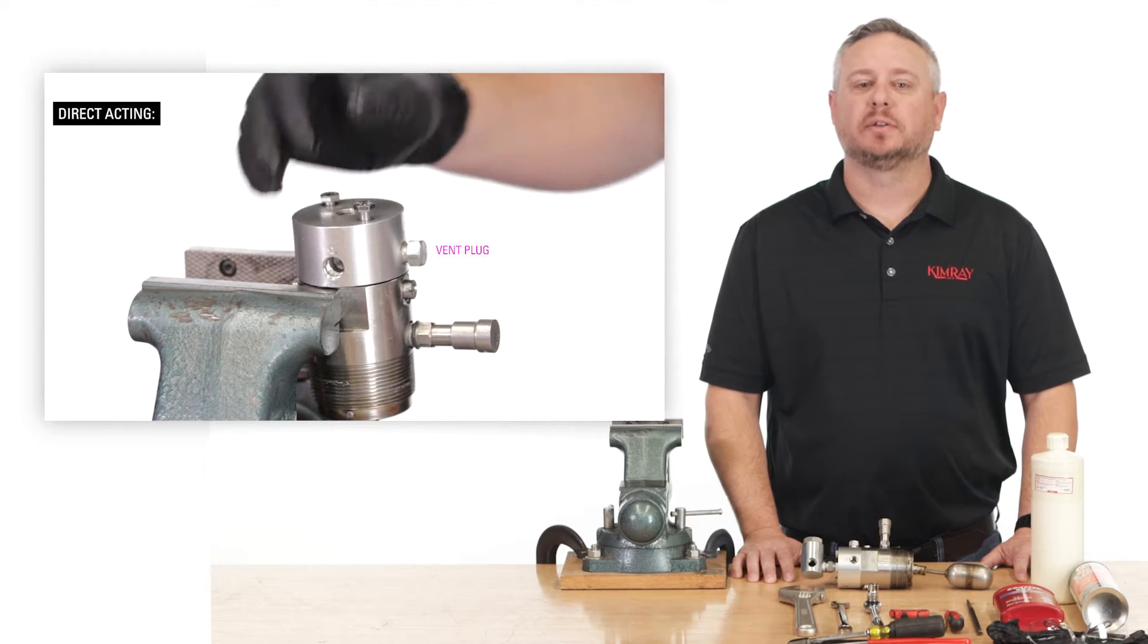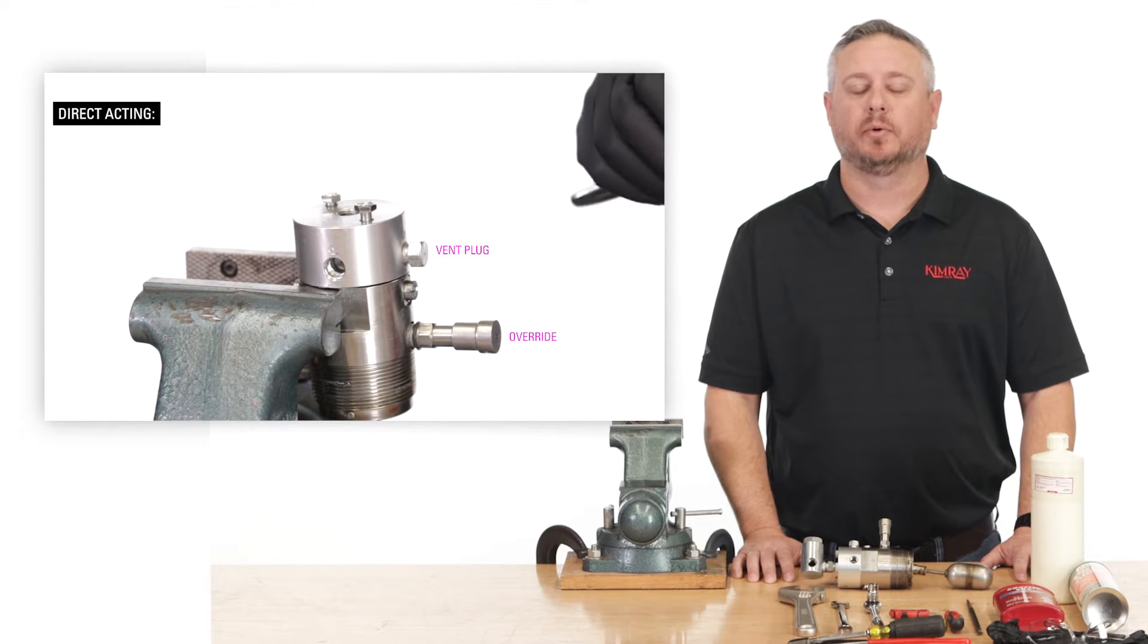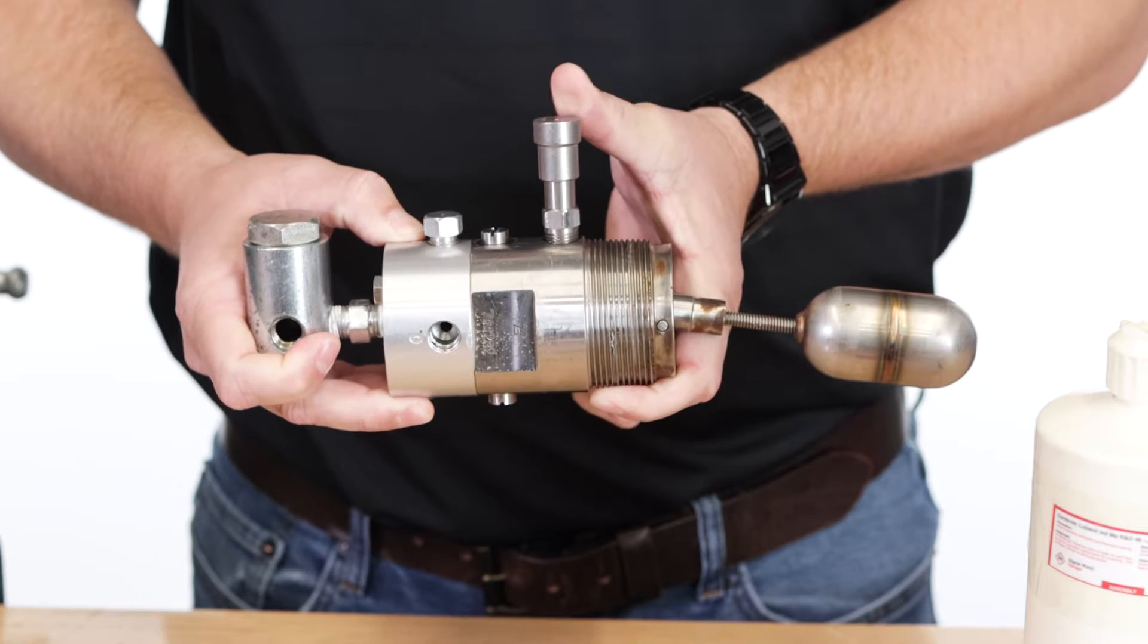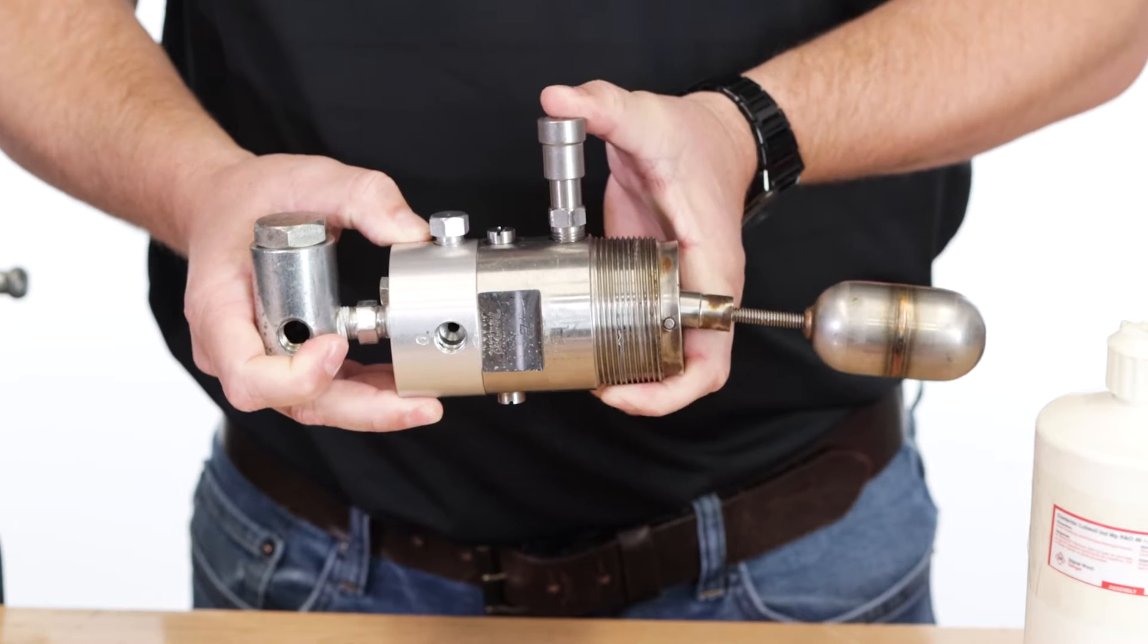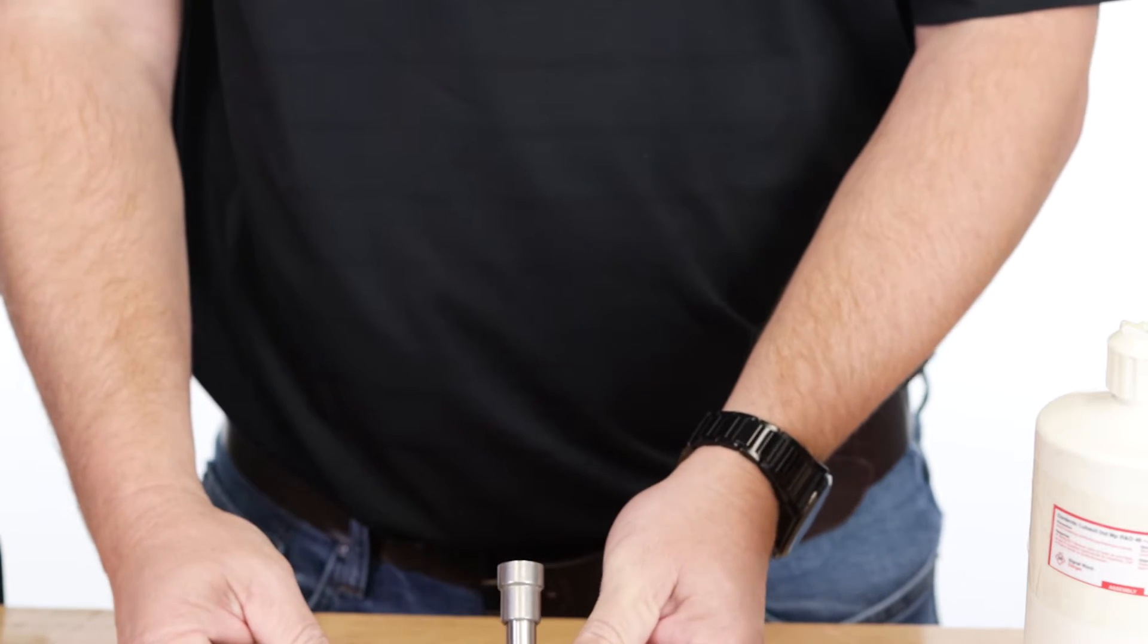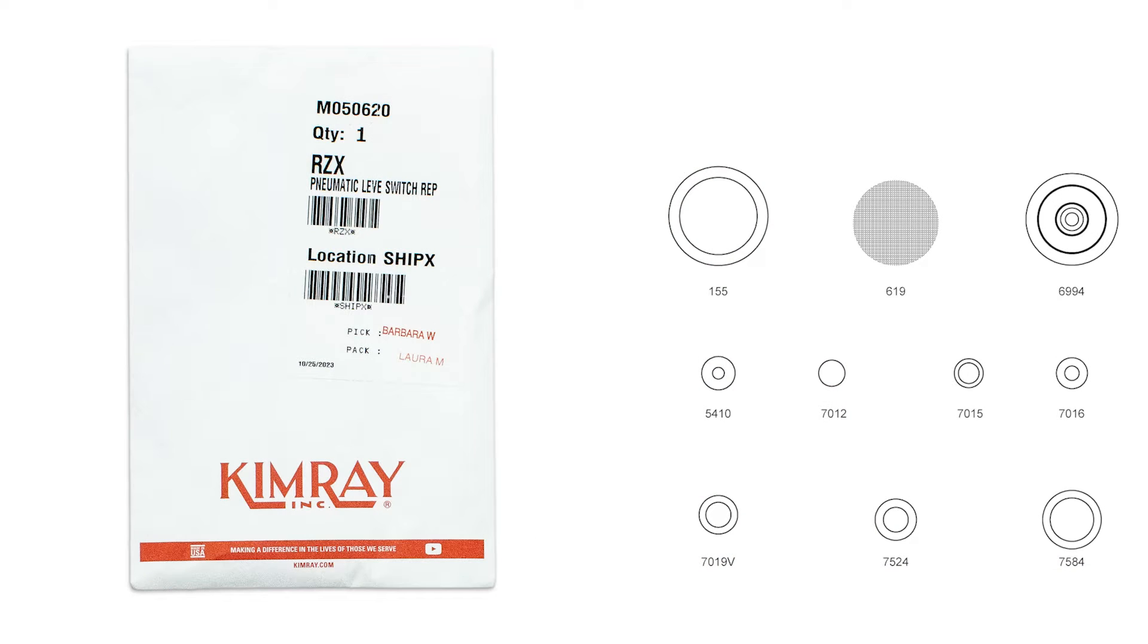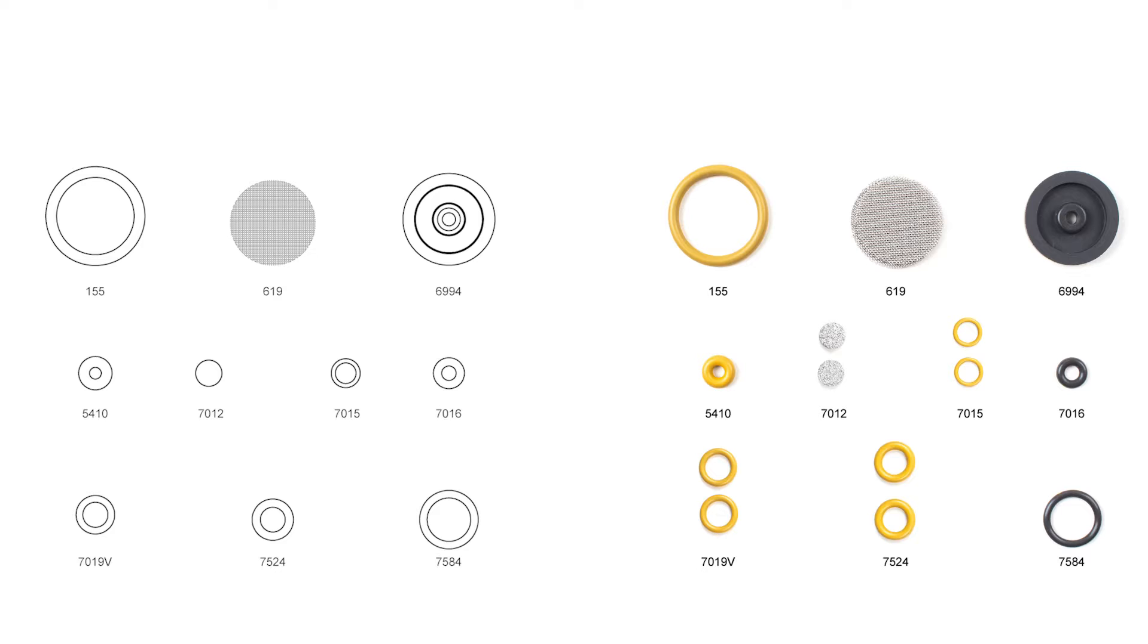We'll go over how to easily change this from direct to indirect later in the repair video. You can test the level switch by holding down the manual override. We recommend testing this at least every six months to confirm the level switch is working properly. We also recommend using a repair kit at least once a year for preventative maintenance. While the body will last for many years, the internal components and soft goods can wear out more quickly.